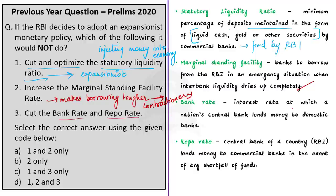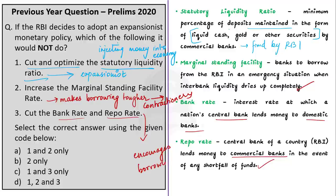The third statement talks about cutting the bank rate and repo rate. The bank rate is the interest rate at which a nation's central bank lends money to domestic banks, often as very short-term loans. The repo rate is the rate at which the central bank lends money to commercial banks in the event of any shortfall of funds. Lowering both encourages borrowing — that means it is expansionary monetary policy. So options one and three are expansionist, while option two is contractionary.